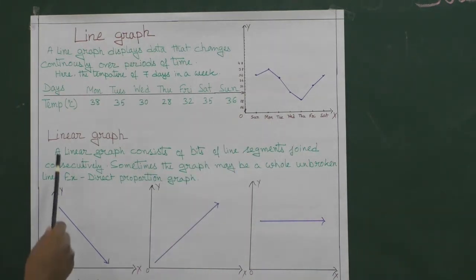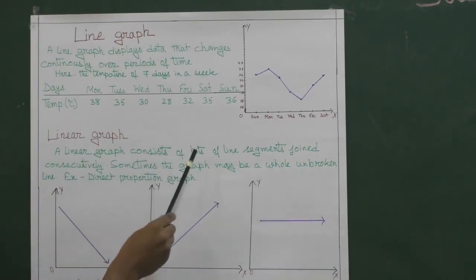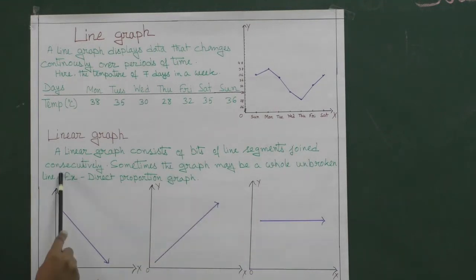Next, come to linear graph. Linear graph means a graph which consists of bits of line segments joined consecutively. Sometimes the graph may be a whole unbroken line. So here you can see some figures of linear graph. It can be like this straight line directed downwards, or it can be a sleeping line like this. Examples we can take for this linear graph include direct proportions graph, which we have already done in class, in the chapter Direct and Inverse Proportions Activity.